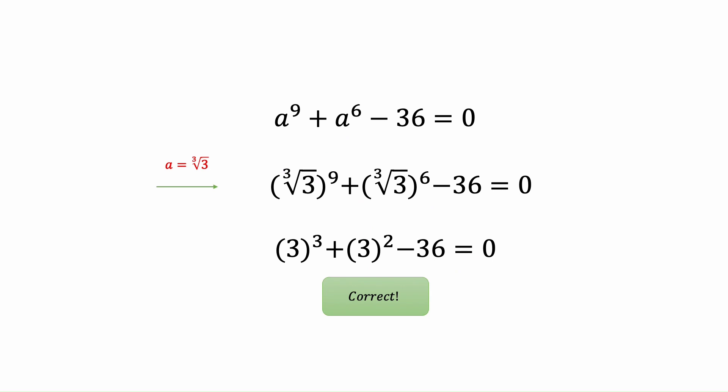So the only root that we had for this equation was cube root of 3. So now we want to check if our answer is correct or not. So we substitute a by cube root of 3. So now we will have this one: cube root of 3 to the power 9, cube root of 3 to the power 6 minus 36 equals to 0.